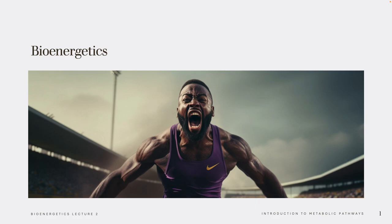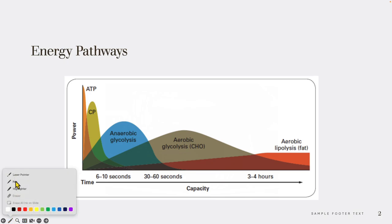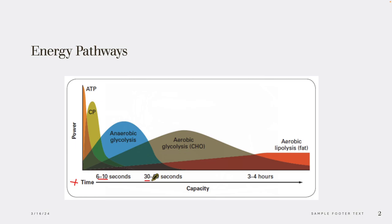What we're going to be talking about today is metabolic pathways. Looking at this graph, the x-axis shows time — you can see 6 to 10 seconds here, 30 to 60 seconds, and then a gap from 60 seconds to multiple hours. This graph shows where the power or energy for muscle contraction is coming from.